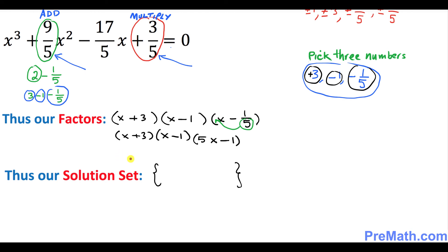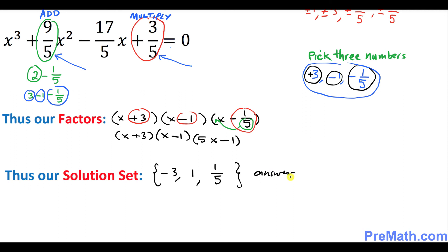Finally, our solution set: look at the numbers positive 3, negative 1, and negative 1 fifth, then switch their signs. So this becomes negative 3, positive 1, and positive 1 fifth. That is our answer. Thanks for watching and please subscribe to my channel for more exciting videos.